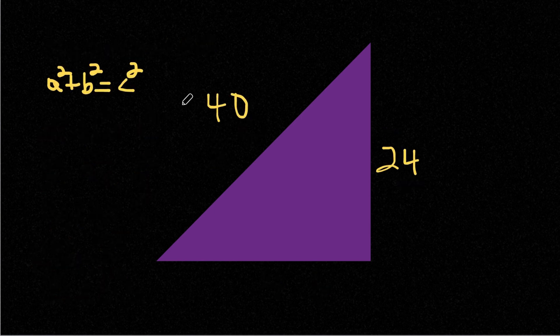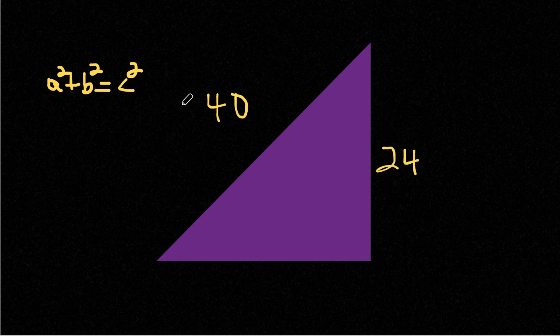All right. So for this problem, we are given the length of our hypotenuse and one side. However, we're missing one of our non-hypotenuse sides. To find that side, we can simply plug in these two values into our Pythagorean theorem. So C is 40, and let's say 24 is A.